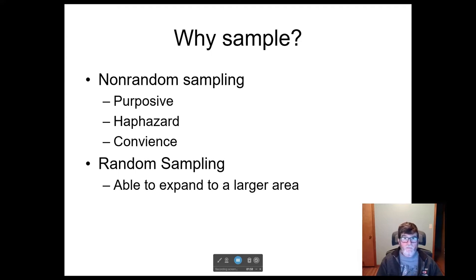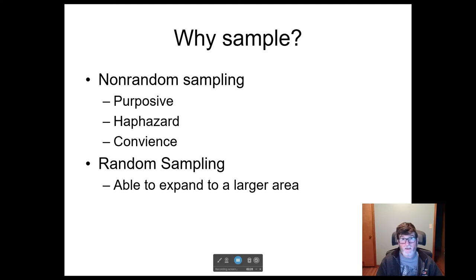The key feature of a random sample is that, if done carefully, it means we can extrapolate from our sample to some larger population we're really interested in. When we talk about breeding birds along roadsides, we're not really interested in just those roadside birds — we're trying to say something about the species population across an entire continent. With a random sample, on average the bias is zero, and that's the key reason why we do random sampling.